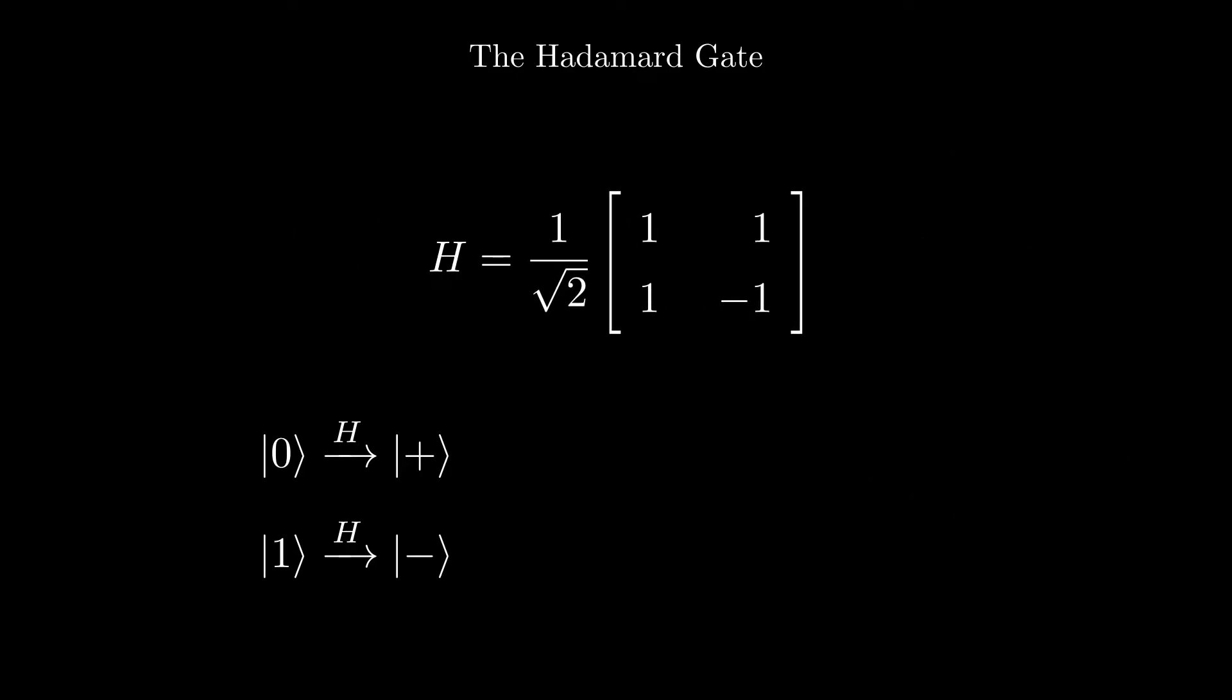Applying a Hadamard to the plus state gives us the zero state, and applying a Hadamard to the minus state gives us a one state. This means that the Hadamard is its own inverse.